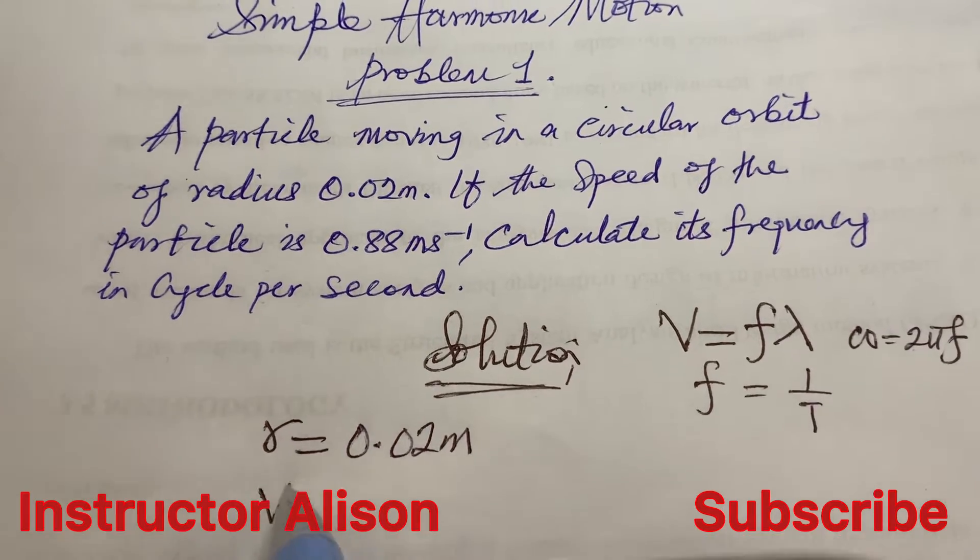We also saw from the problem that the speed, which we could use the symbol V to represent, is also given as 0.88 meters per second.